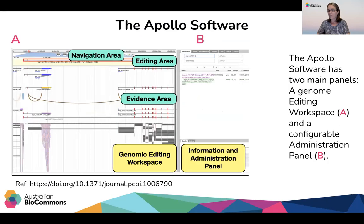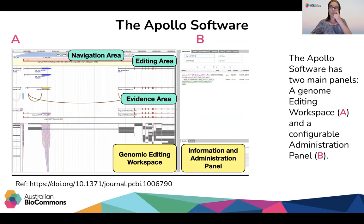When looking at the Apollo software in a web browser, there are two panels: the genome editing panel, which provides an interactive area for tweaking or curating your automatically produced annotations with collaborators if you have them, and the administration panel, where you can upload your evidence files and also your organisms and add or remove users to your organism. One example of an international collaboration was the curation of more than 33,000 gene loci on the Kiwi genome by 93 annotators, which provided researchers with an opportunity to correct a number of the gene models.